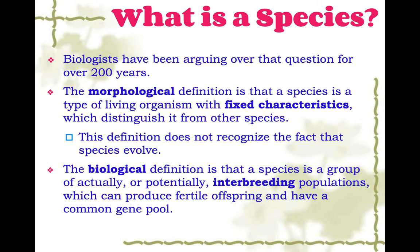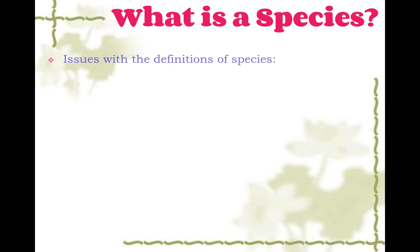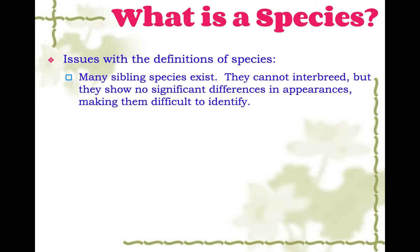So basically, that one says you're part of the same species if you can breed together and make fertile offspring. And that's the biological definition we mostly focus on. But there are some issues: there are what are called sibling species — they cannot interbreed, but they don't look any different. So they're defined as different species by the biological definition, but not the morphological definition.